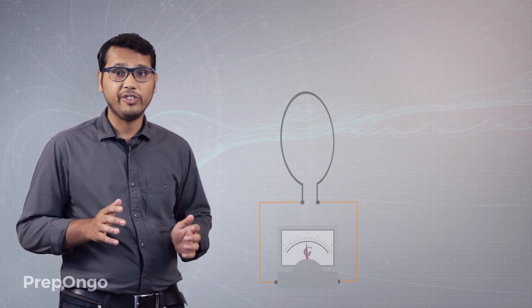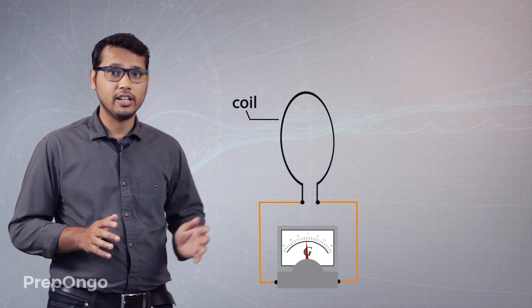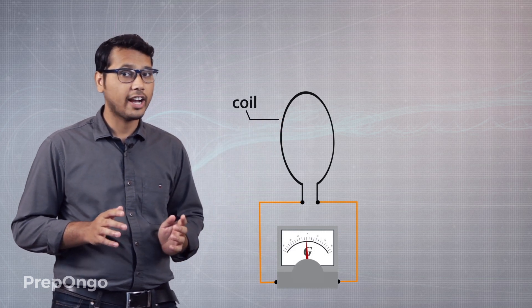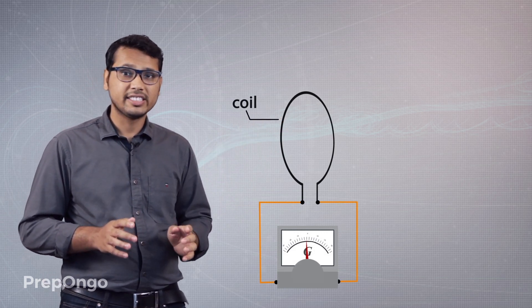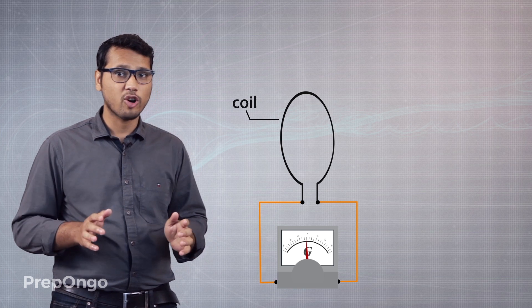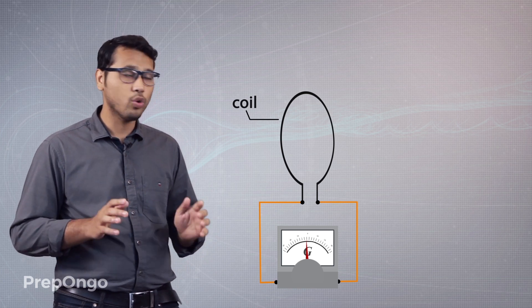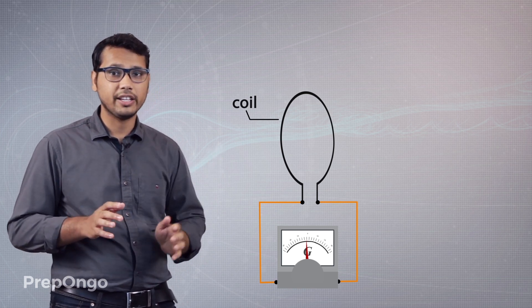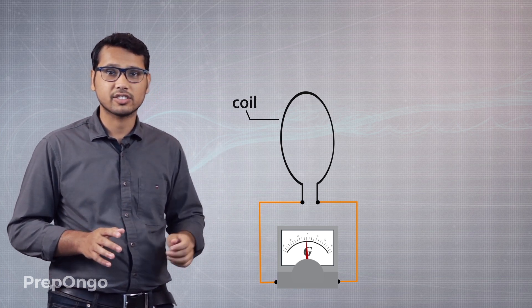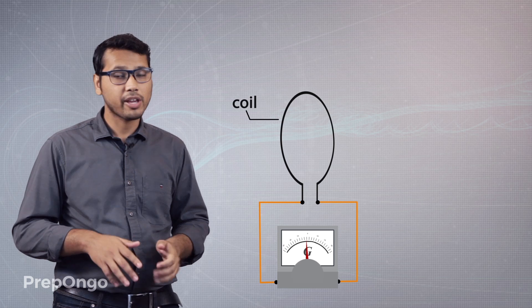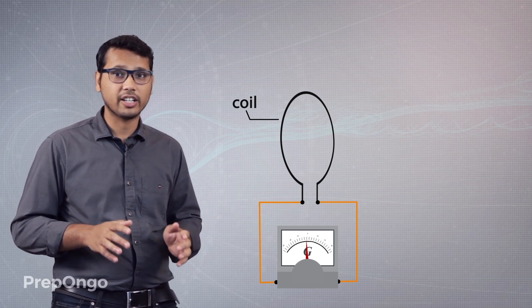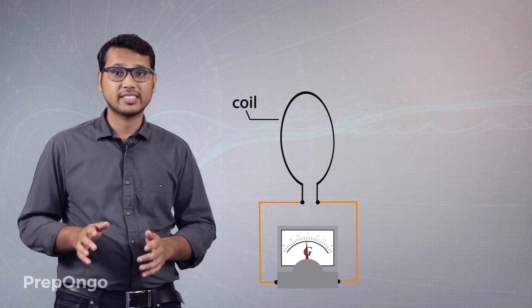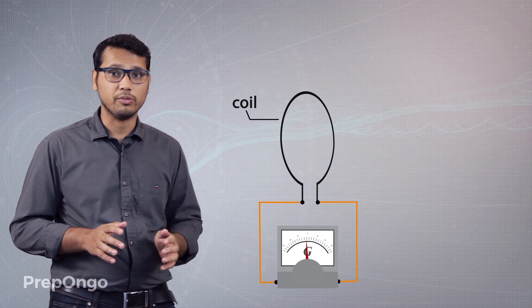To replicate his experiment we need a coil, and we have connected this coil to the galvanometer. This is to ensure that we know when current is being induced in this coil, because the galvanometer shows a deflection when current passes through it.